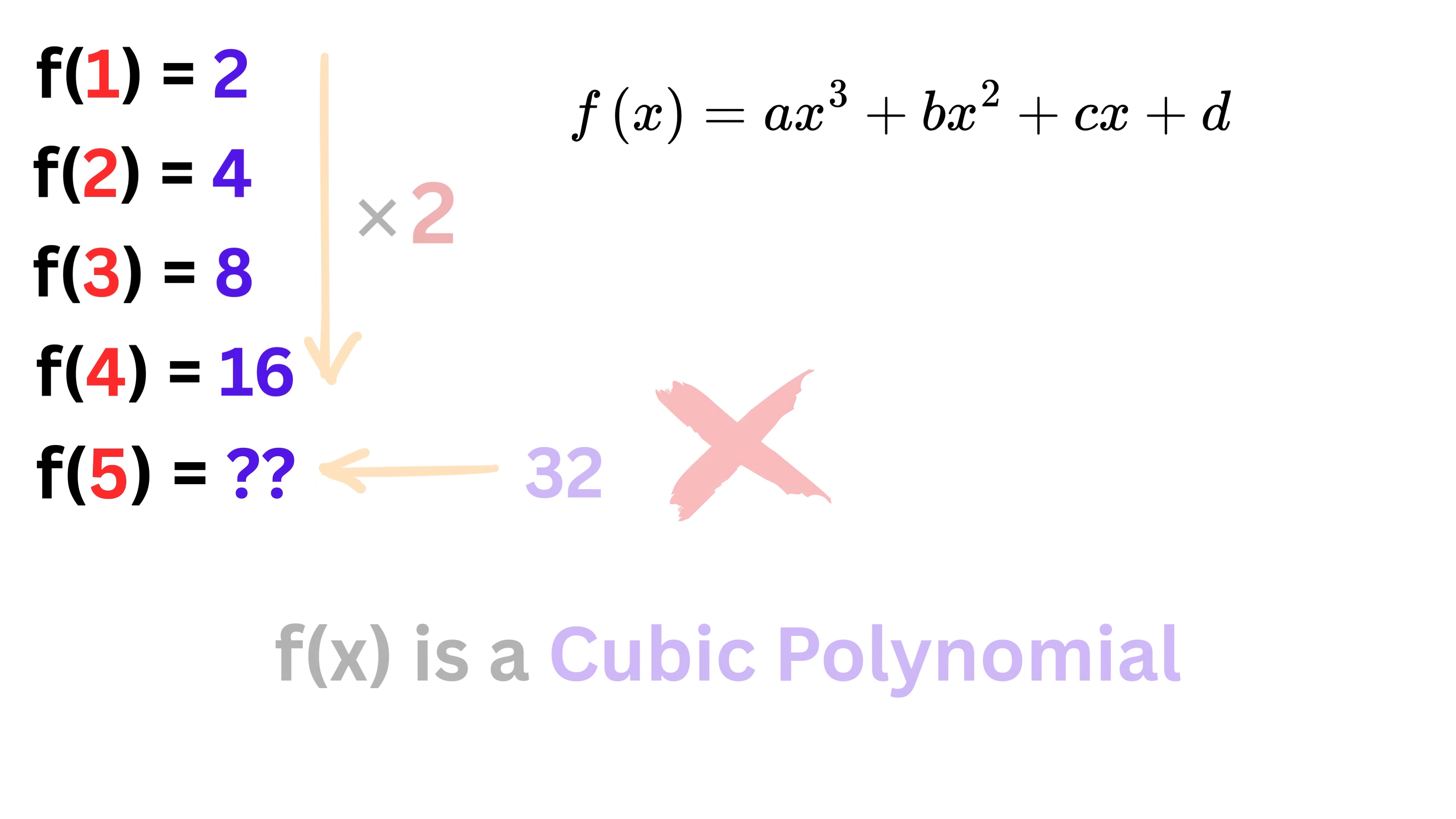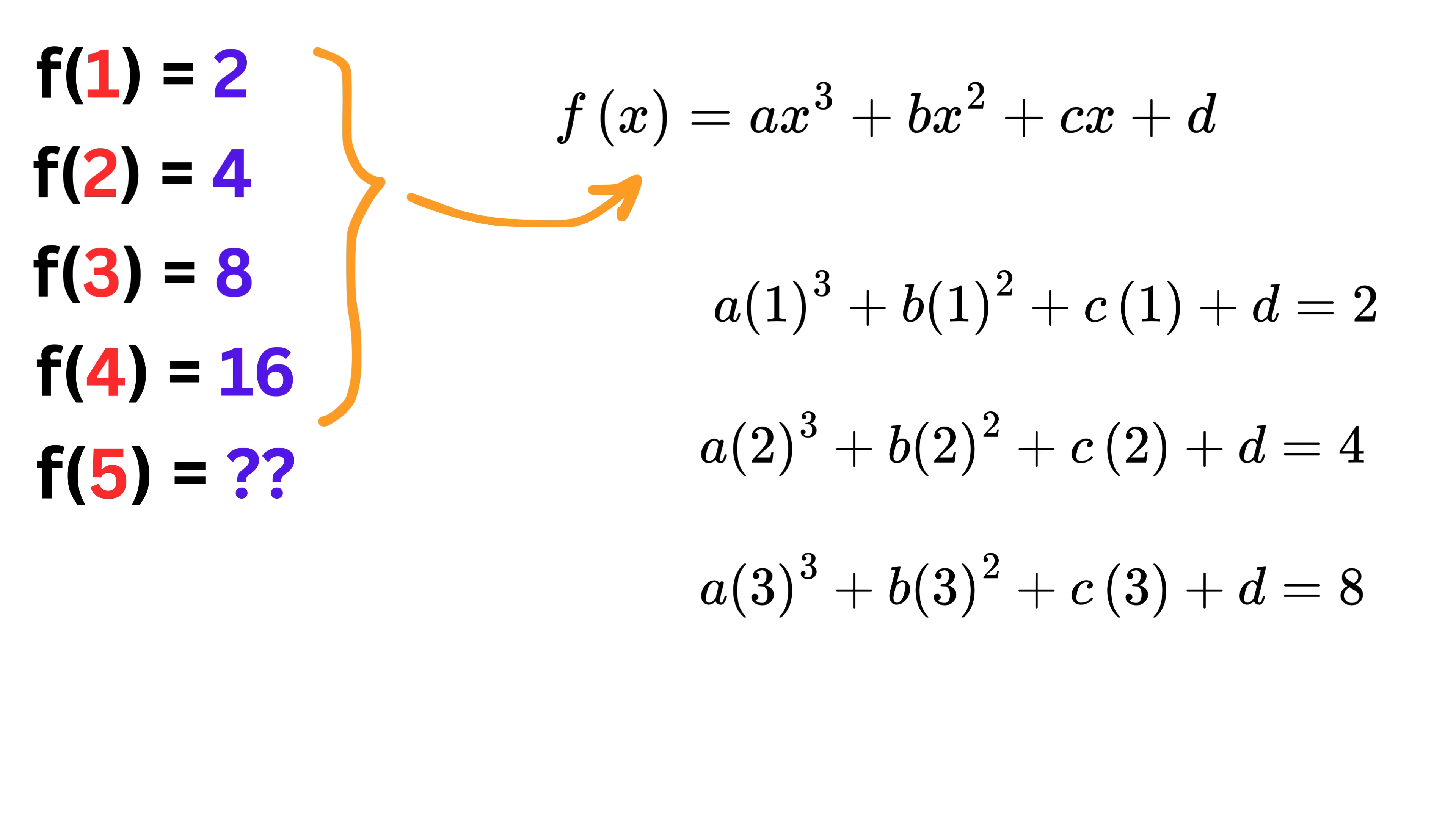One way to solve this problem is by using the fact that when we substitute x and f(x) here one by one, we will get four equations which are just enough to solve for four unknowns a, b, c, and d. Once these coefficients are determined, we can substitute x equals 5 and get the result, or f(5). But this method is quite lengthy as we will have to solve a system of four linear equations to find these coefficients, and after that we will also have to find f(5) by substituting x equals 5.